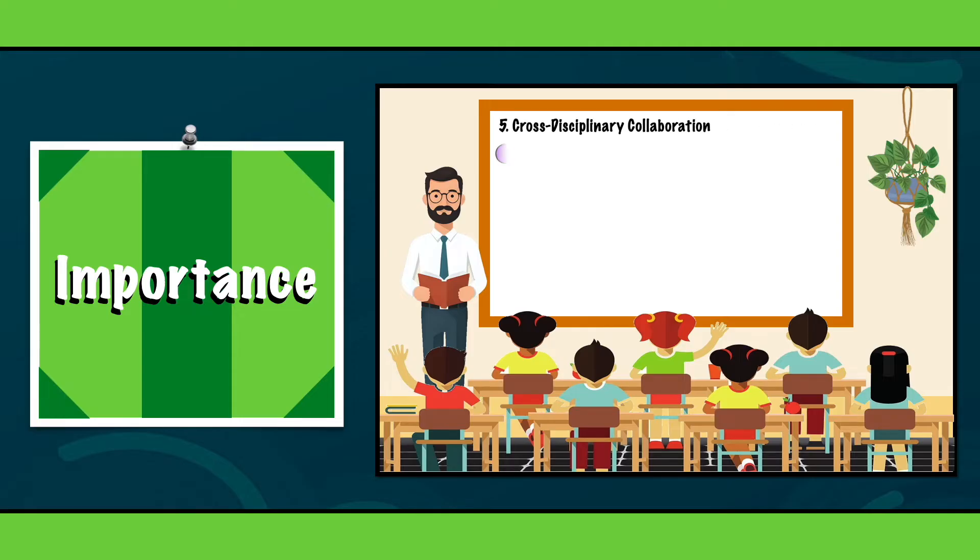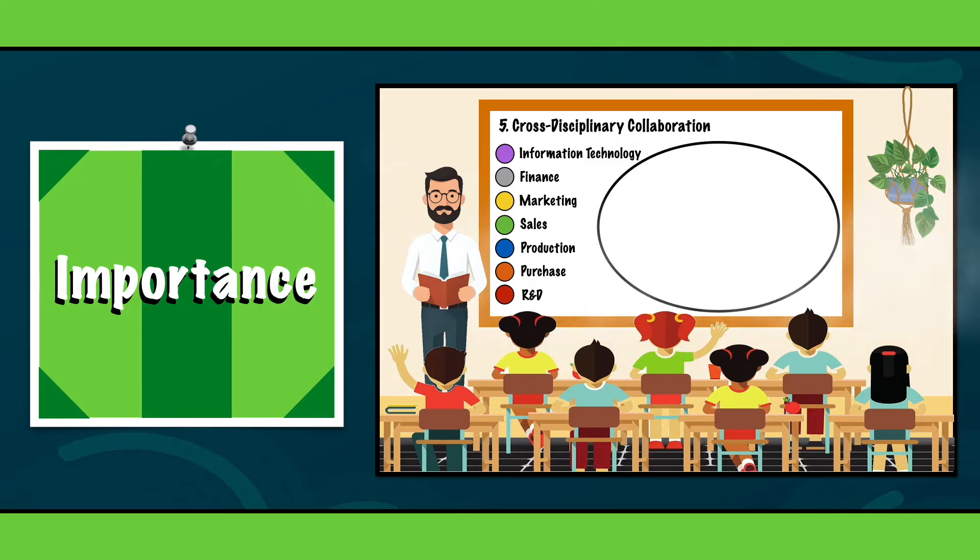Fifth, cross-disciplinary collaboration. SLCA encourages cross-disciplinary collaboration. It brings together different departments like R&D, marketing, and operations to work towards common sustainability goals. This collaboration can lead to innovative solutions and a more cohesive approach to sustainability.